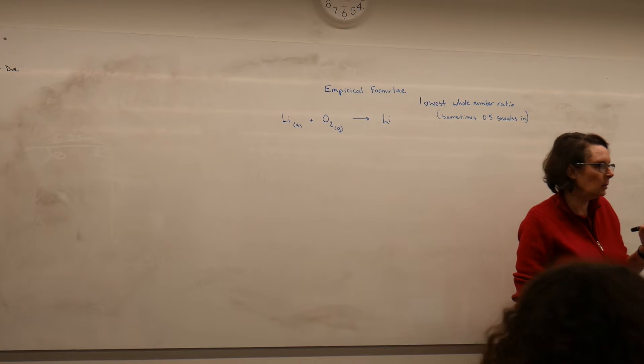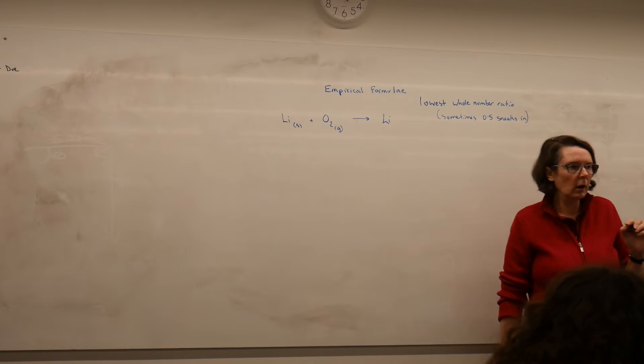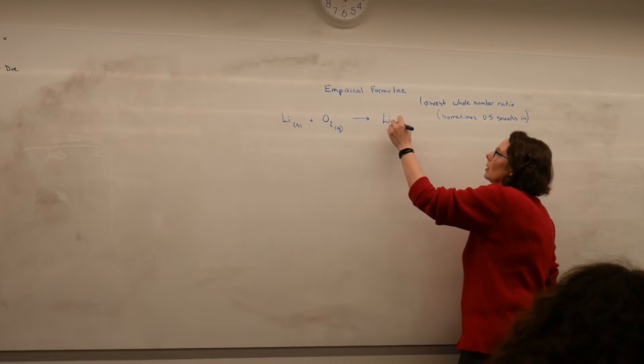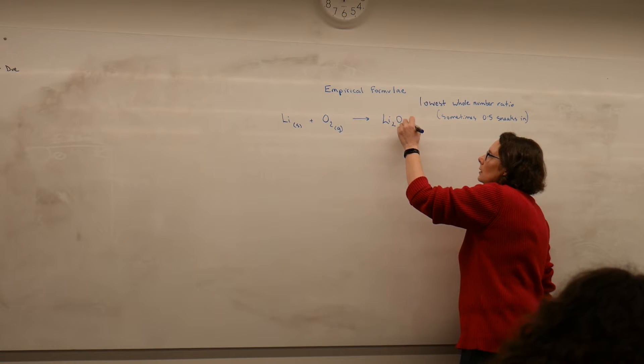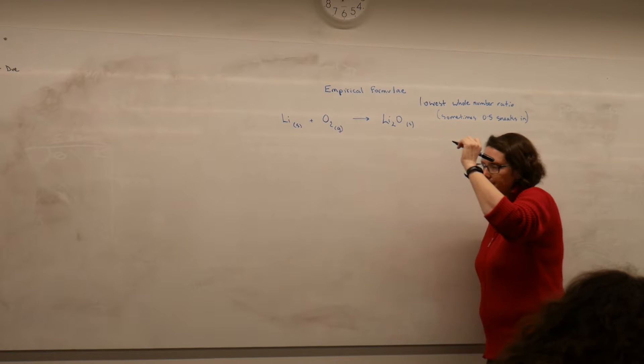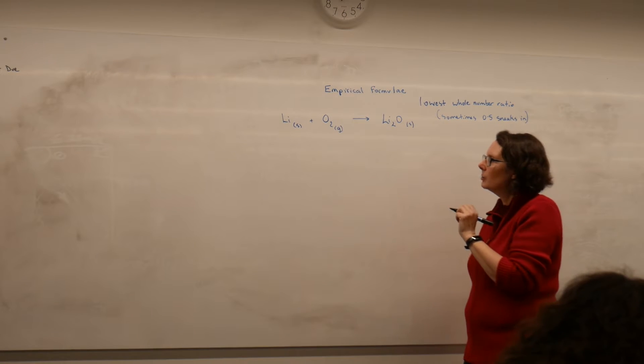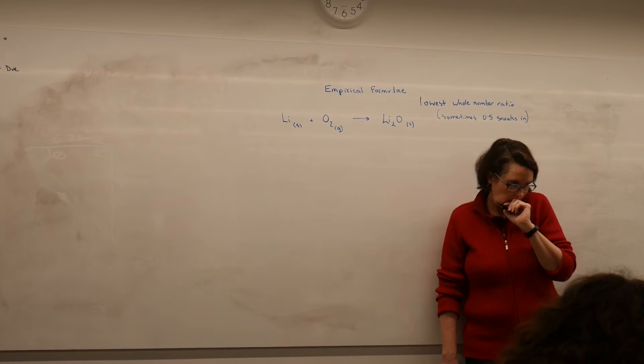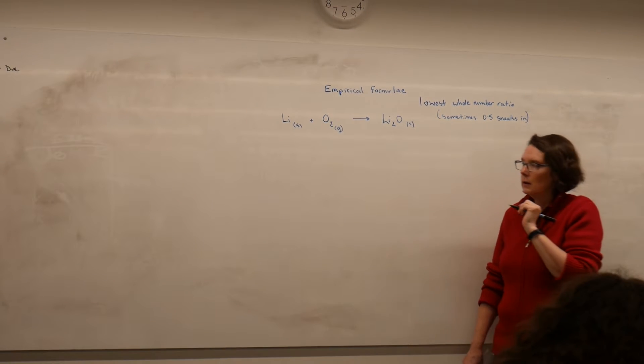So when I write lithium oxide, what would I have to write? Li2O to balance it. So that means my equation is not balanced. What am I going to need to do to balance it? Put a 2 in front of the lithium.